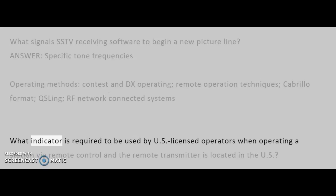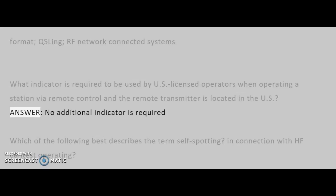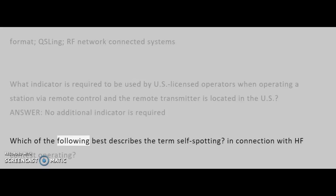What indicator is required to be used by U.S. licensed operators when operating a station via remote control and the remote transmitter is located in the U.S.? Answer: No additional indicator is required.